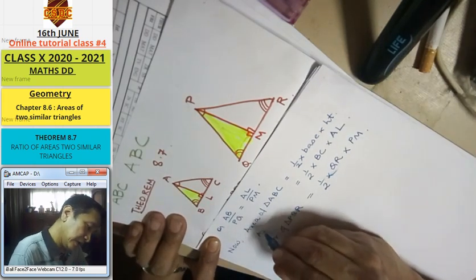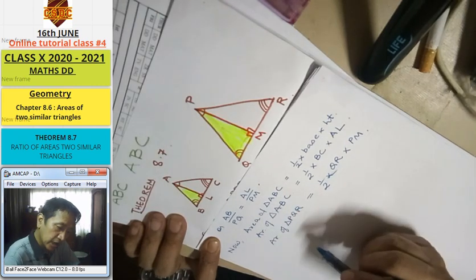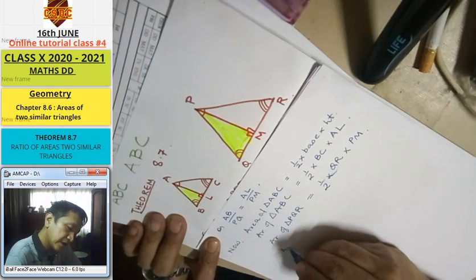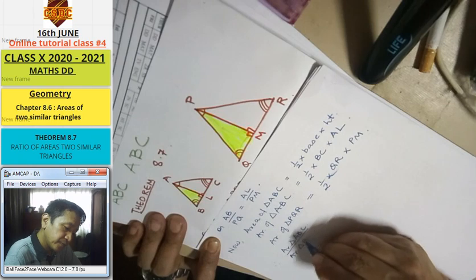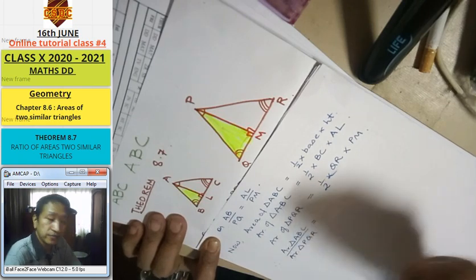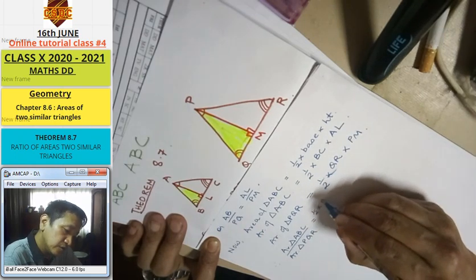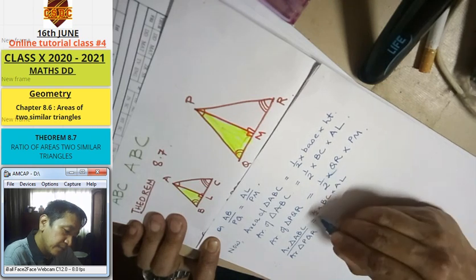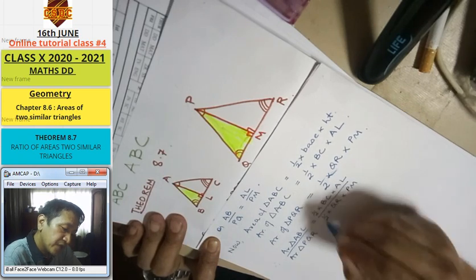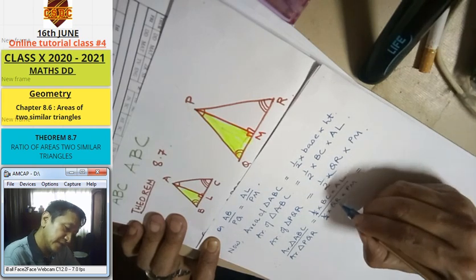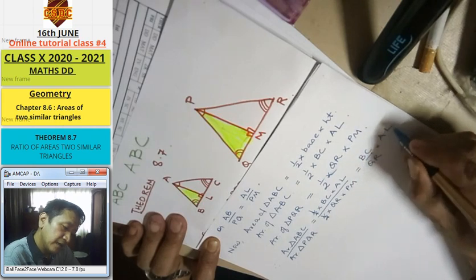Therefore, area of triangle ABC by area of triangle PQR equals half into BC into AL by half into QR into BM. The halves cancel, giving BC by QR into AL by BM.